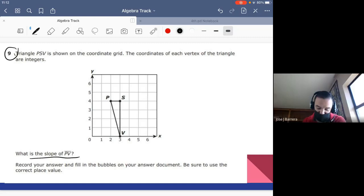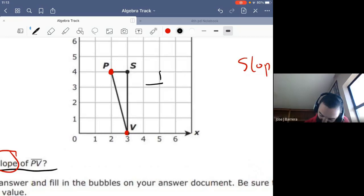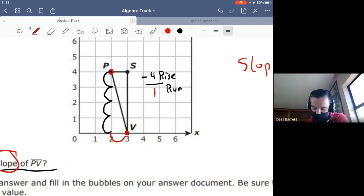Triangle PSV is shown on the coordinate grid. The coordinates of each of the triangles are integers. What is the slope? If you remember, slope is our rise over run. So we need to basically get from P to V. Well, our rise, it doesn't rise, it drops, but it goes down negative one, two, three, four, over our run. Well, from here, I need to move one more. So one to the right. So negative four over one. We have to divide negative four divided by one equals to negative four. That is your slope.